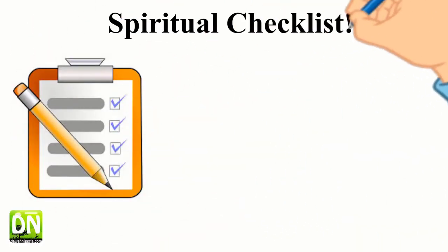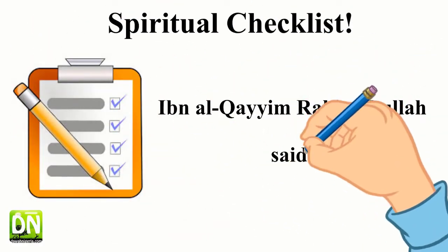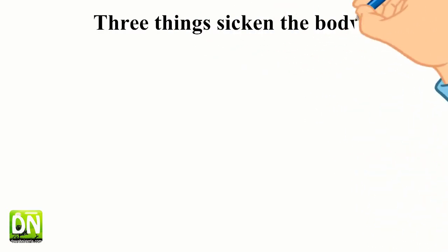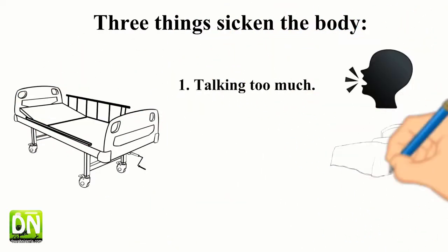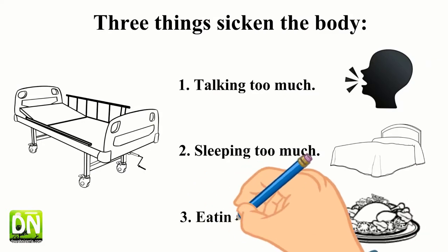A spiritual checklist: Ibn al-Qayyim, may Allah have mercy on him, said three things sicken the body - talking too much, sleeping too much, and eating too much.